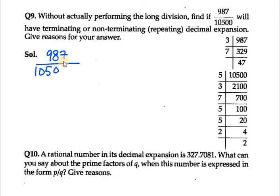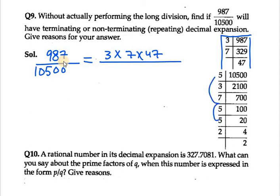Now to save time I have already done for 987 and 10500. So for 987 we can write it as 3 into 7 into 47 over 10500, which can be written as 5 cube, 3 raised to power 1, 7 raised to power 1, and 2 raised to power 2.